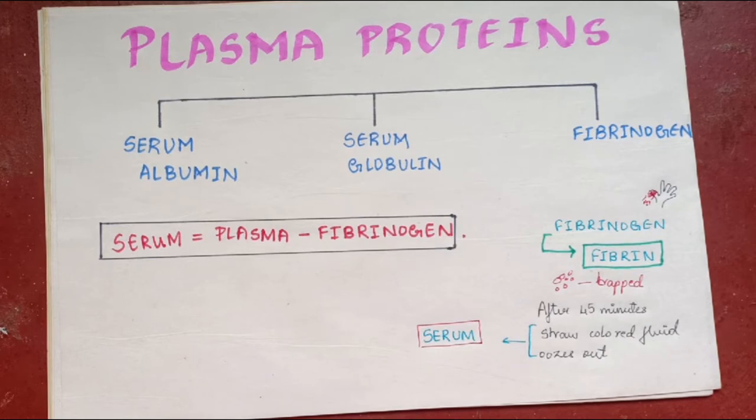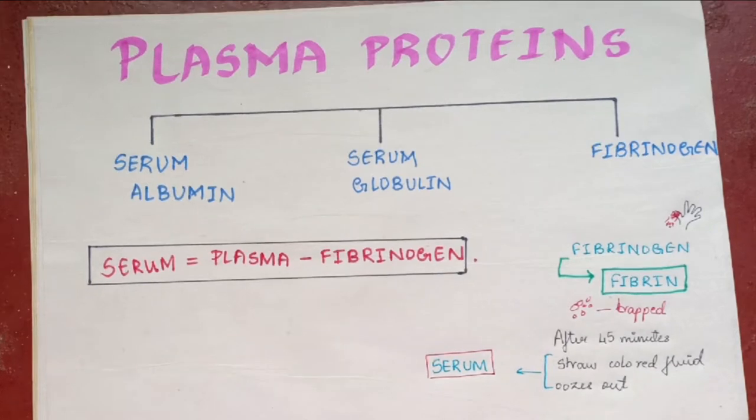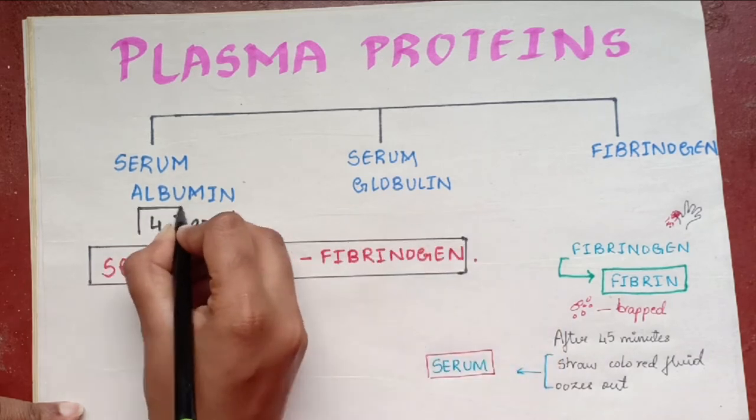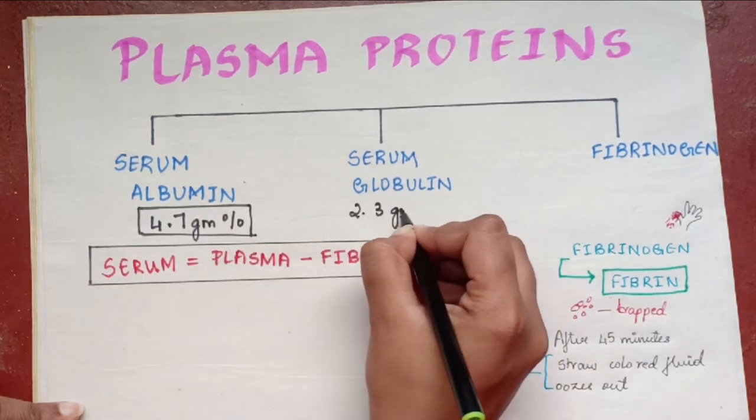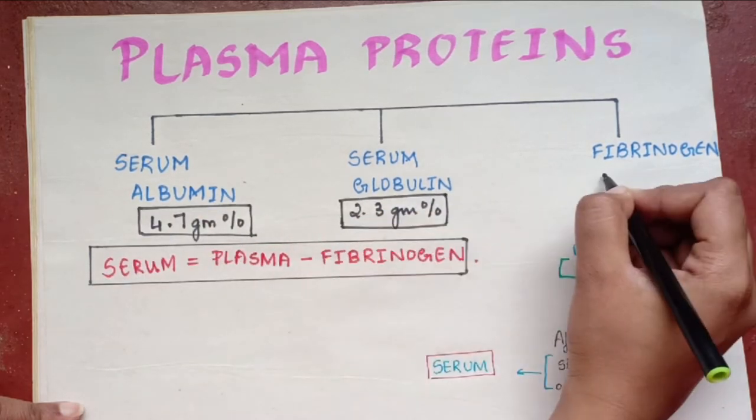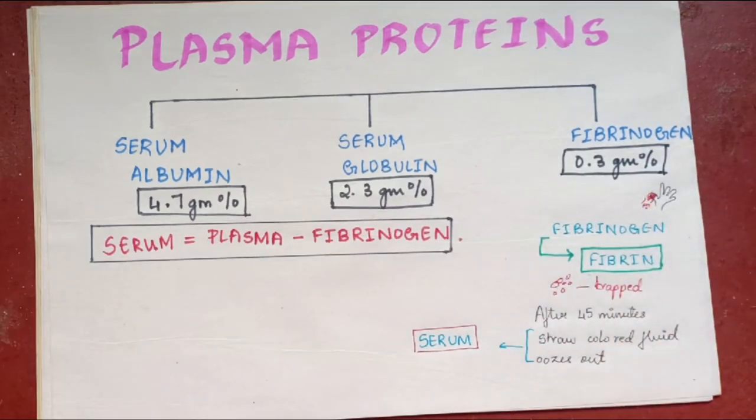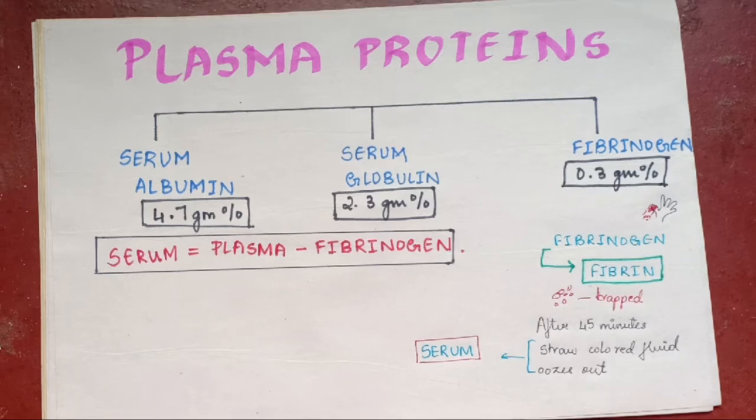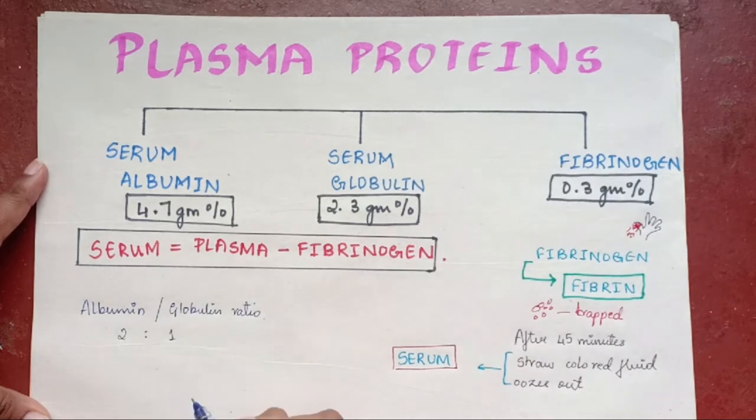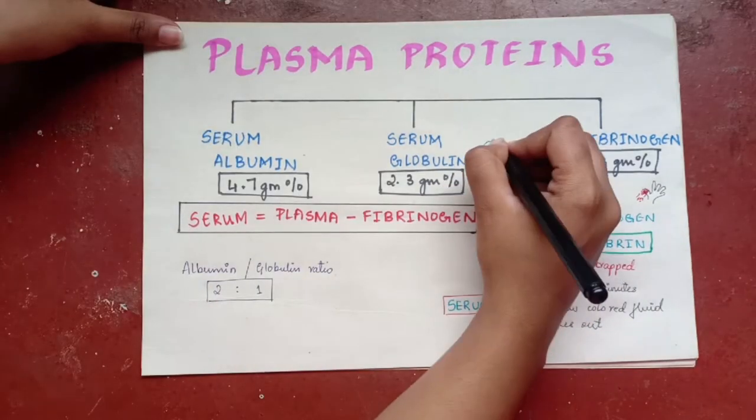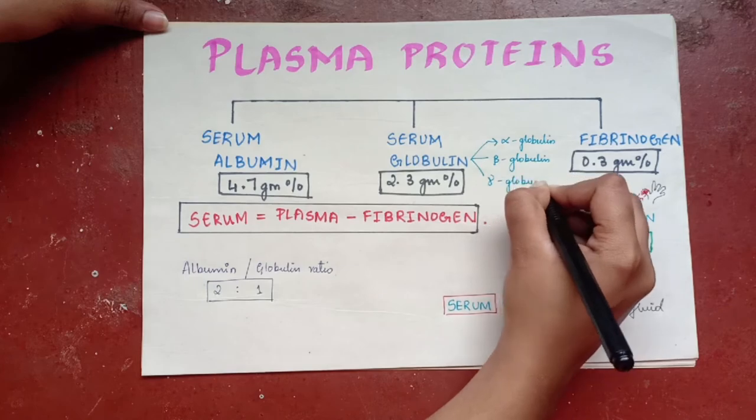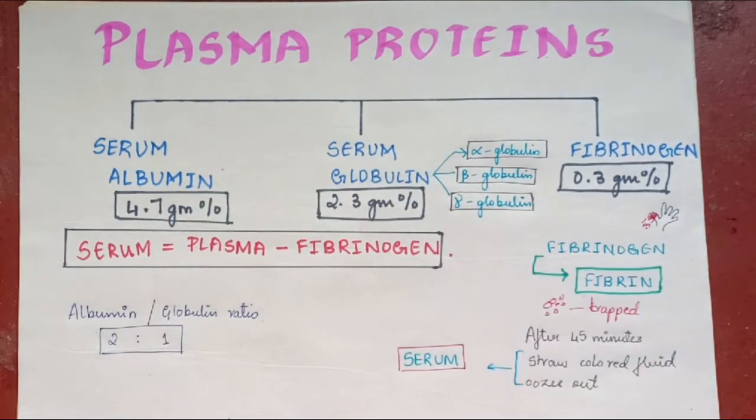The normal values of plasma protein are serum albumin 4.7 gram percentage, serum globulin 2.3 gram percent, and fibrinogen is 0.3 gram percent. The ratio between plasma levels of albumin and globulin is called albumin globulin ratio. It is 2 is to 1. There are three types of serum globulin: alpha globulin, beta globulin, and gamma globulin.